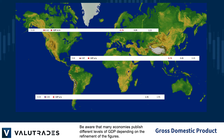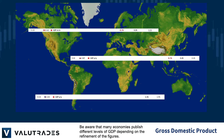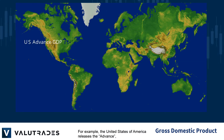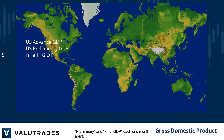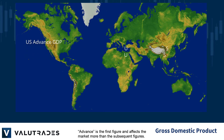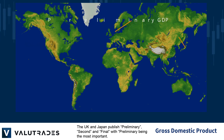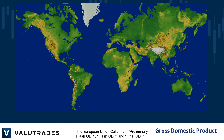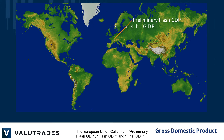Be aware that many economies publish different levels of GDP depending on the refinement of the figures. For example, the United States releases the advance, preliminary, and final GDP, each one month apart. Advance is the first figure and affects the market more than the subsequent figures. The UK and Japan publish preliminary, second, and final, with preliminary being the most important. The European Union calls them preliminary flash GDP, flash GDP, and final GDP.